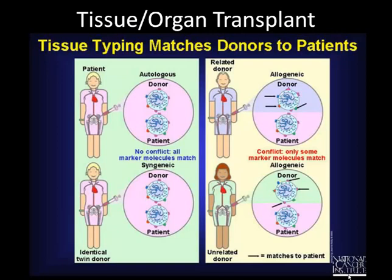We also have tissue and organ transplant rejection. Sometimes a patient receives an organ from a donor but they don't have the same cell surface markers, and the body starts destroying the organ itself. We have to match the donor and recipient closely enough, and we also give the patient drugs that weaken their immune system a little so it won't attack the organ.